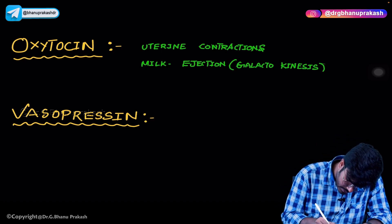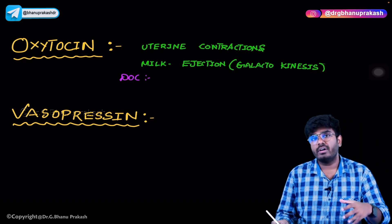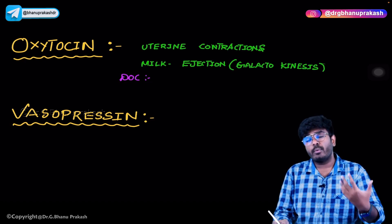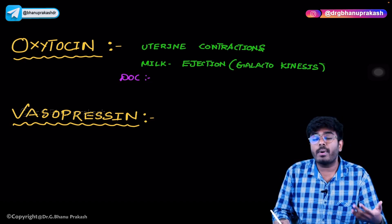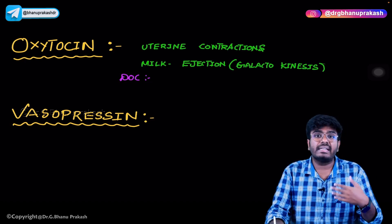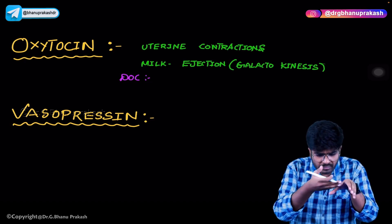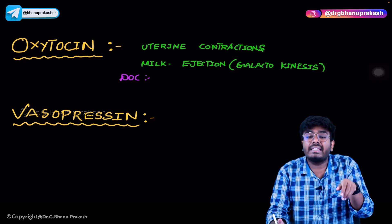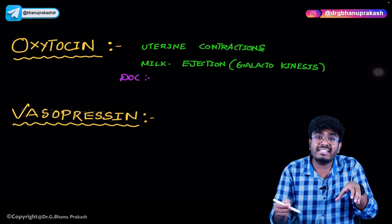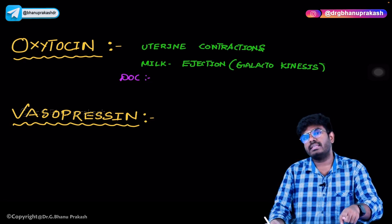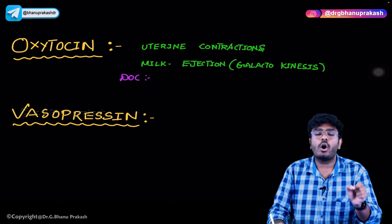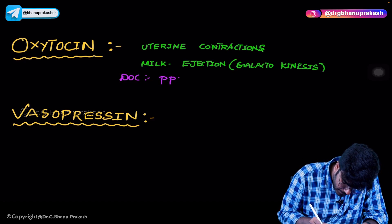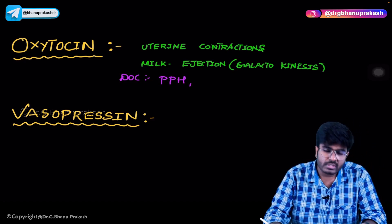Oxytocin is also the drug of choice for certain conditions. During vaginal delivery, if there is hemorrhage of more than 500 ml, or during a caesarean section if hemorrhage exceeds 1000 ml, that condition is termed postpartum hemorrhage. To treat it, we need to contract the uterus so it clamps down the bleeding blood vessels. So the drug of choice for postpartum hemorrhage is oxytocin, which causes uterine contractions and decreases the bleeding.